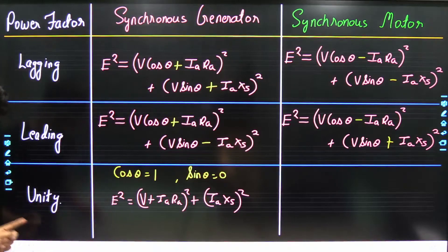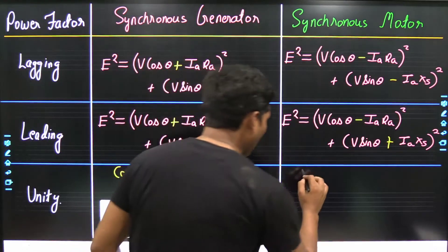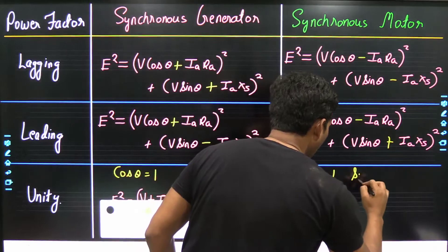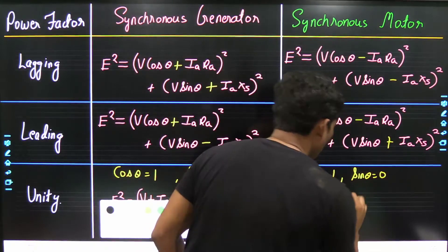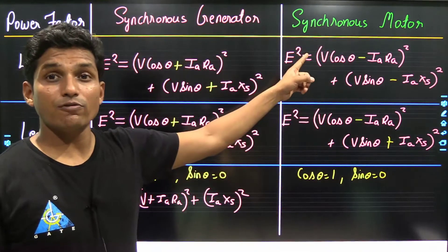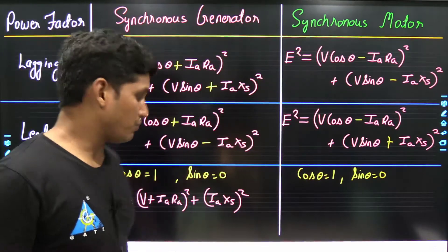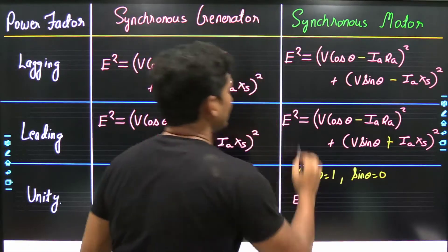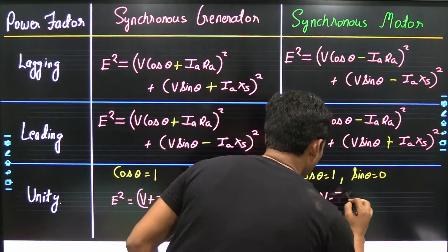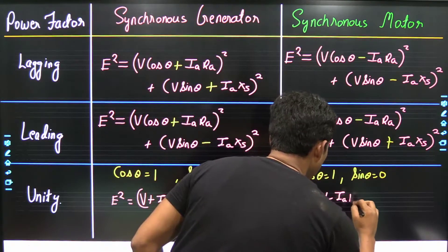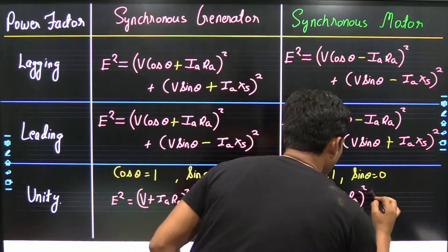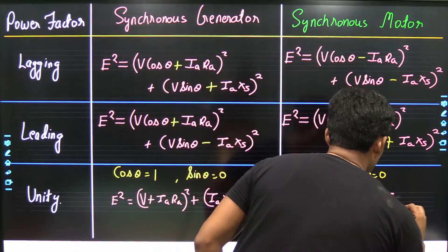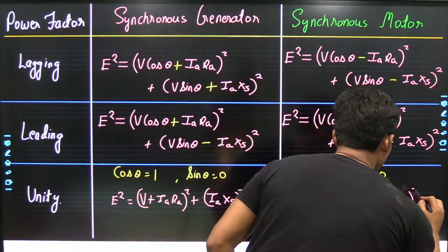At unity power factor for the synchronous motor, cos θ = 1 and sin θ = 0. Putting these values into the lagging power factor motor formula, the formula becomes: E² = (V − Ia·Ra)² + (Ia·Xs)².